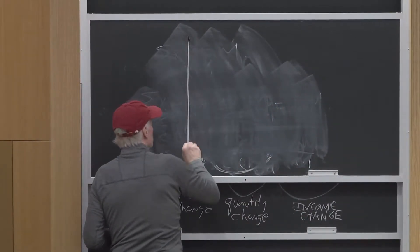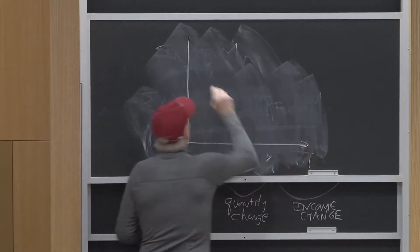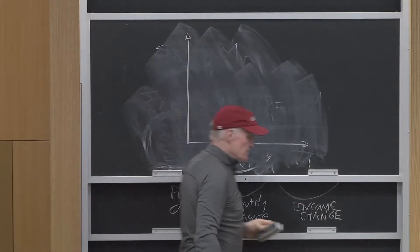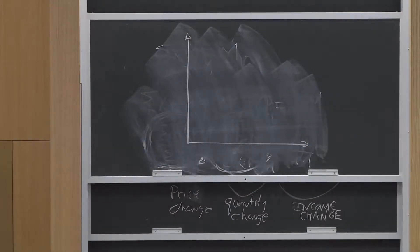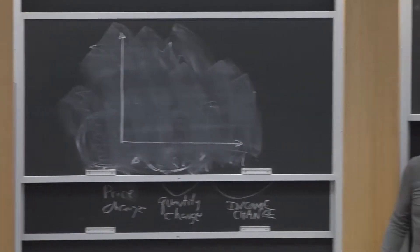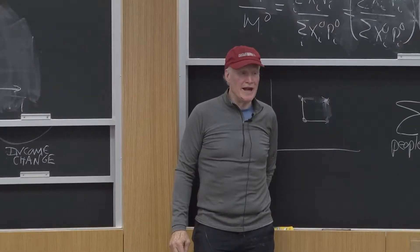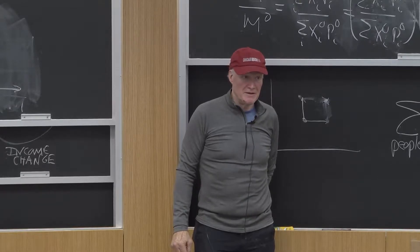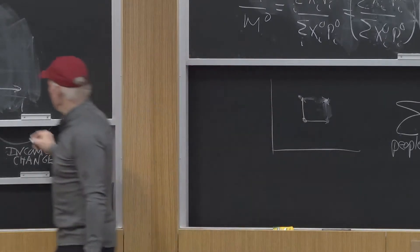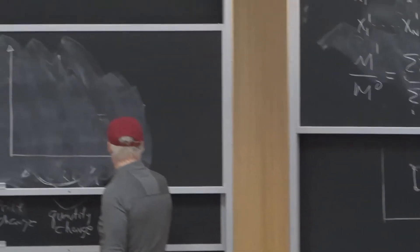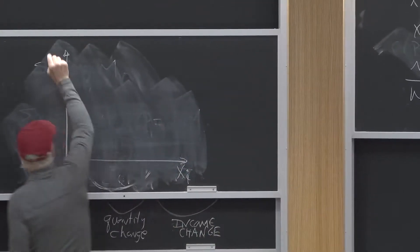So what's a demand curve? An economist says I need a demand curve. What do they mean? What do you put on the axis? You put the quantity of good I here, and you put the price of good I here.